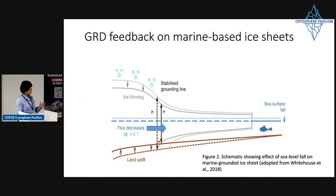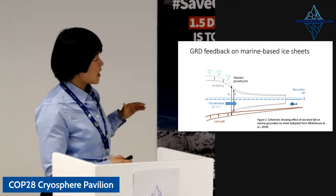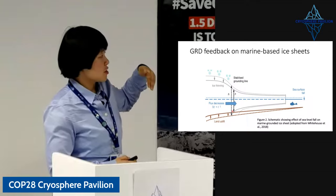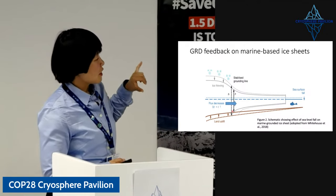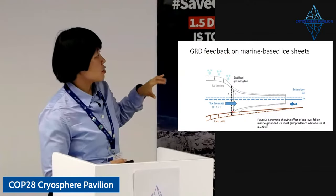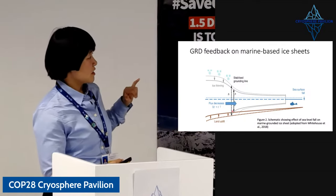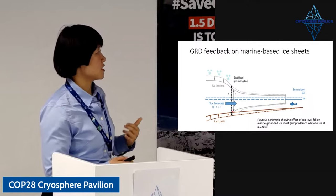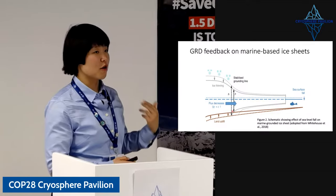When an ice sheet is sitting on a bed where the bed depth is increasing going inland — a retrograde slope — the ice sheet loses mass across its grounding line, which is where the ice sheet starts to float into the ocean. The thickness of the ice sheet at the grounding line is proportional to the depth of the ocean there. If the ice sheet sits on bedrock going deeper and deeper inland, then as the grounding line retreats backward, the ice sheet thickness at the grounding line also increases, leading to increased flux of ice across the grounding line, causing a runaway feedback effect.